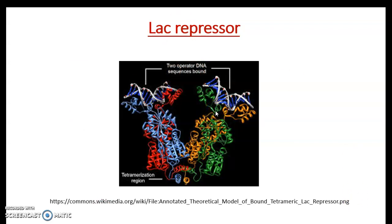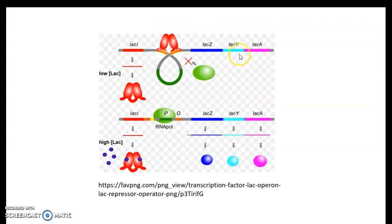The lac repressor is a tetrameric protein having four subunits. These subunits are involved in binding of the lac repressor to the operator regions. The operator regions span three regions in the E. coli lac operon: O1, O2, and O3. O1 is the strong operator region, and along with O1, either O2 or O3 is necessary for repressor binding. In the presence of the tetrameric lac repressor, RNA polymerase cannot bind because the promoter region is inaccessible.